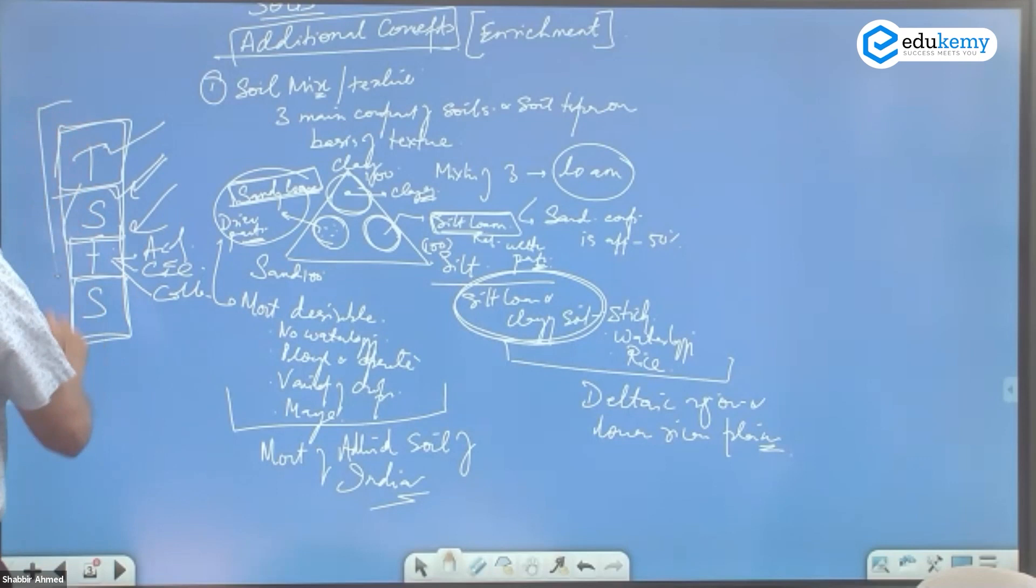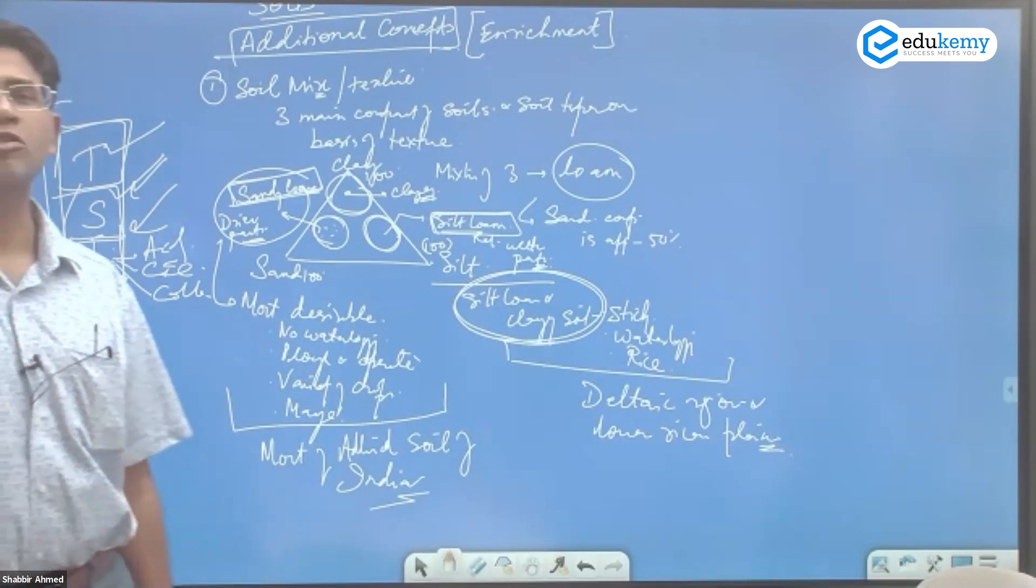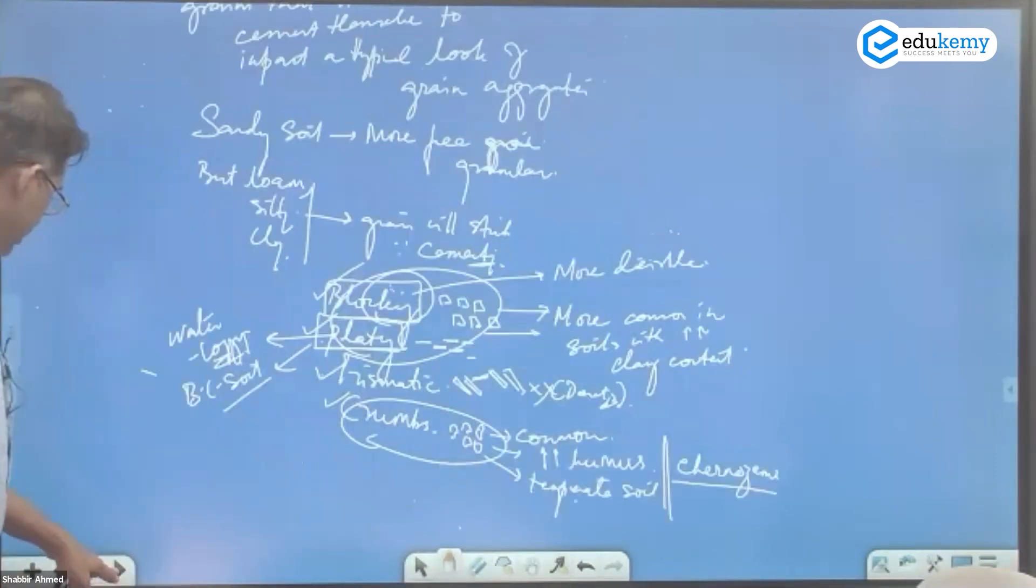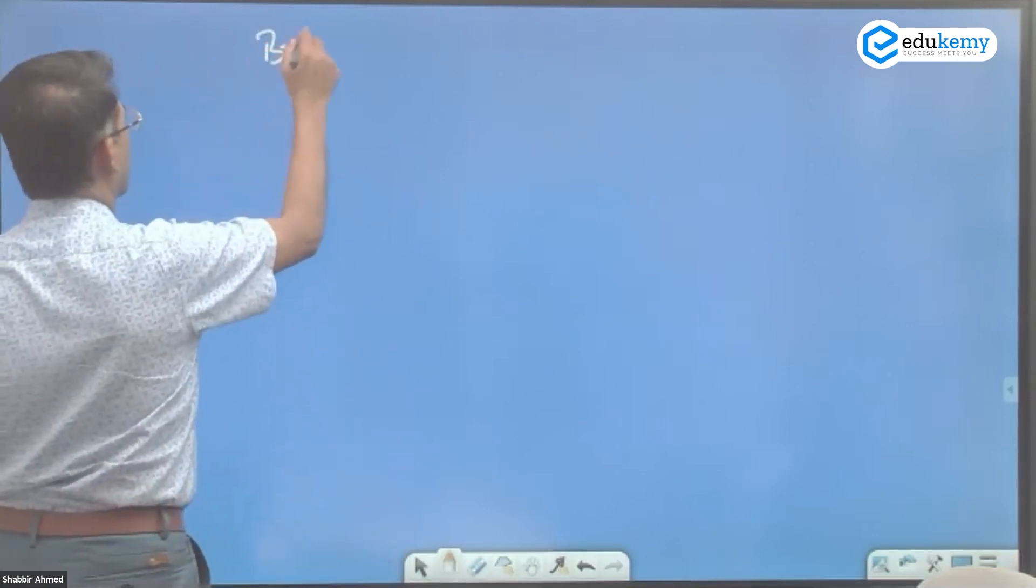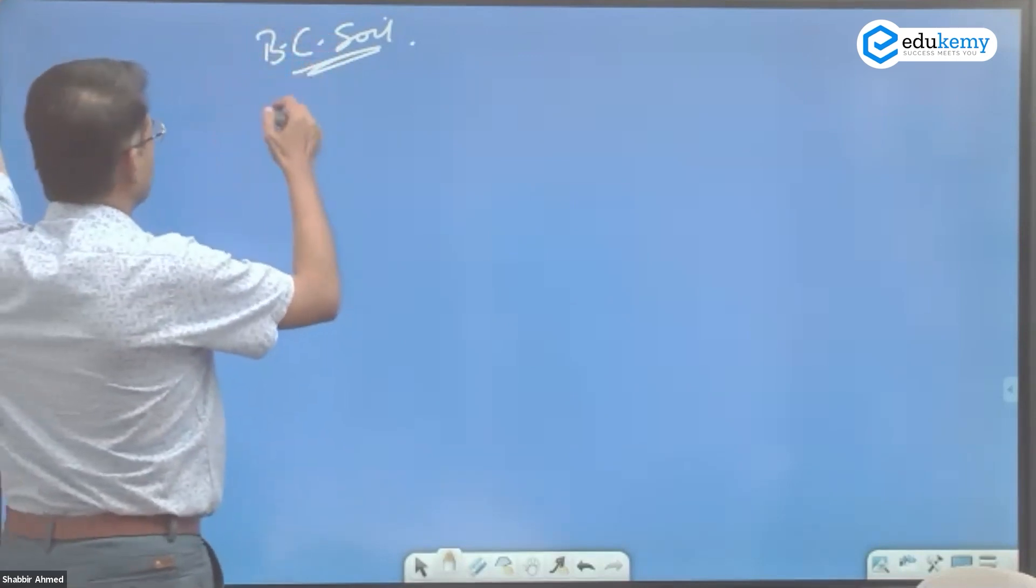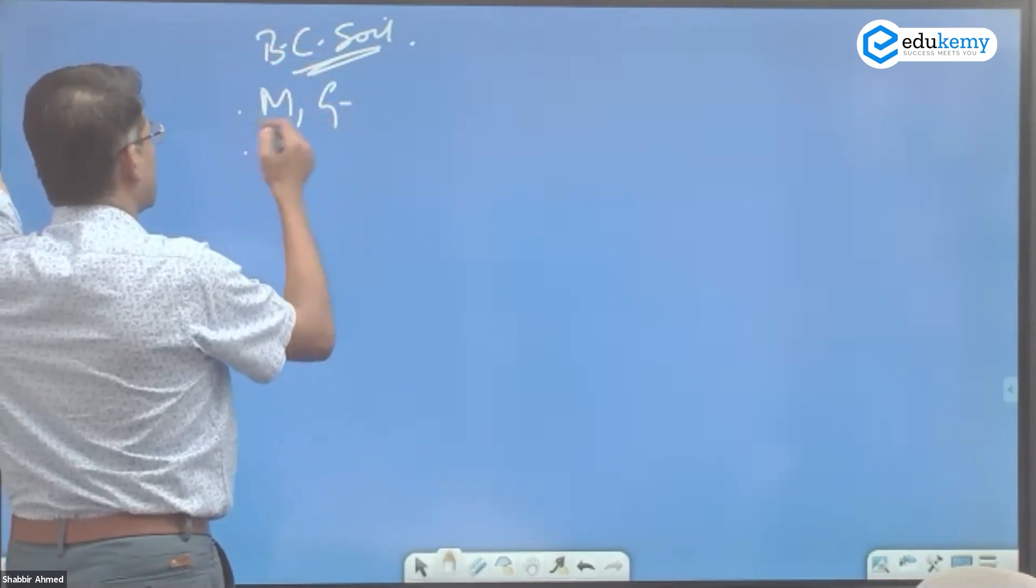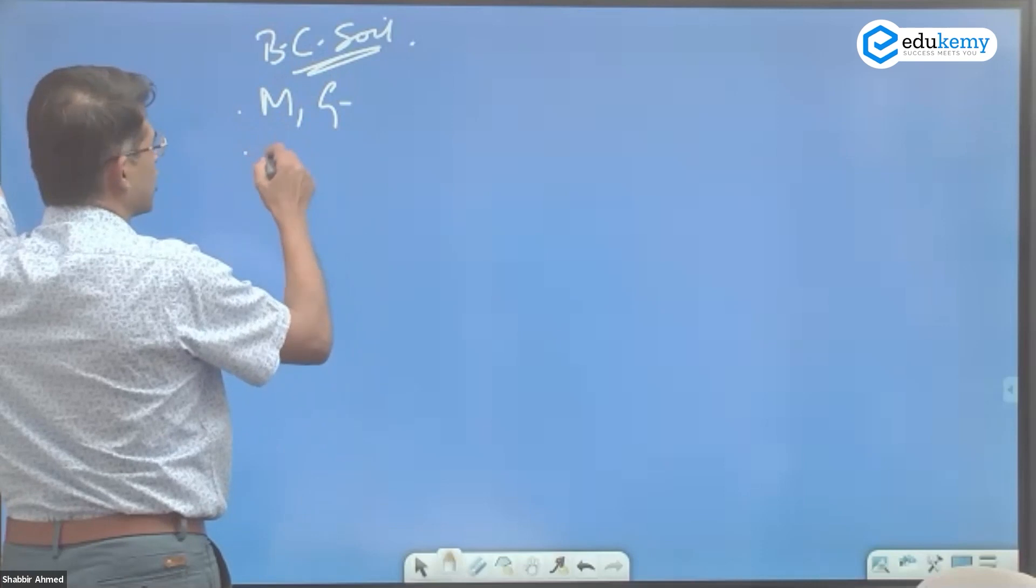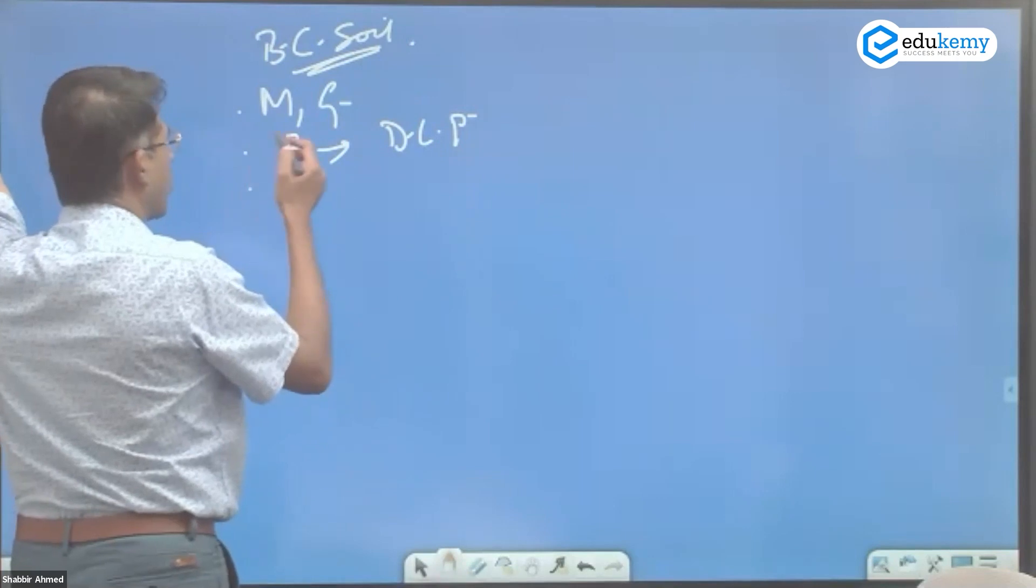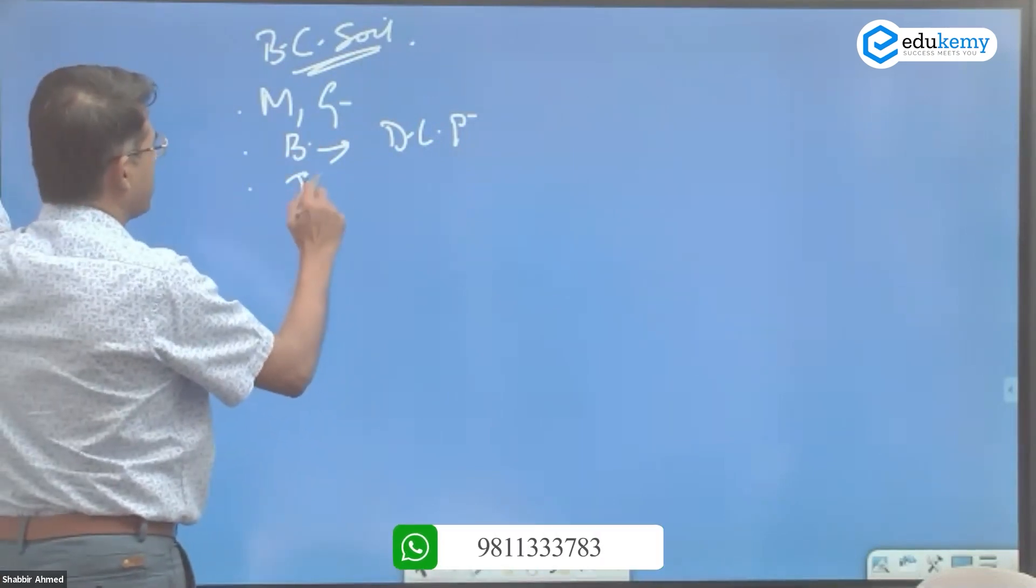If you can add some of these points, your answer becomes more smart. The whole idea is how will your answer look different from some of the other answers. I'll demonstrate this to you. Say they ask you a question - write a note on black cotton soil. What do you know about black cotton soil? It is in Maharashtra, part of Gujarat, it's formed because of disintegration of the basalt rocks in the Deccan lava plateau.